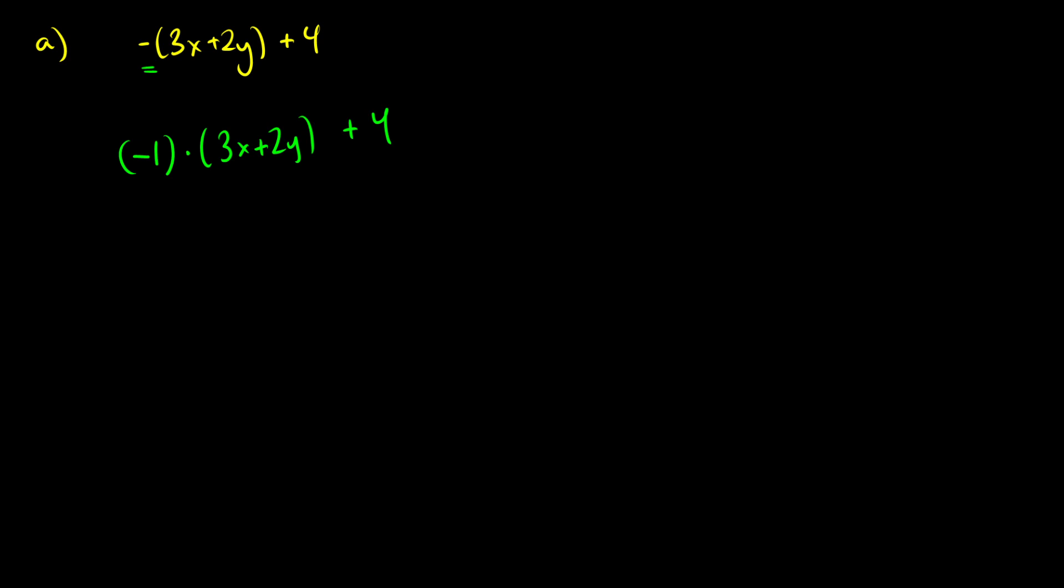So using the distributive property as in the properties of real numbers, this is just an application where we have a negative. We're going to do negative one times 3x, and we're going to do negative one times 2y, and we'll add those together.